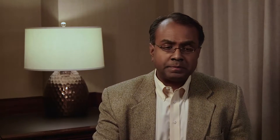Let's take a look at what CME looks like. CME historically was diagnosed with fluorescent angiogram, and on the picture on your left, you can see that there's significant leakage in what's called a petaloid pattern — looking like little rose petals in the macula, in the center of the retina.